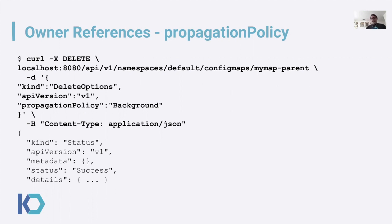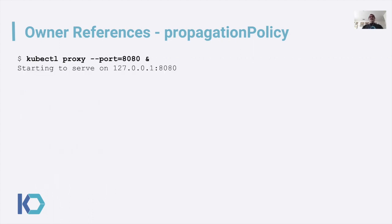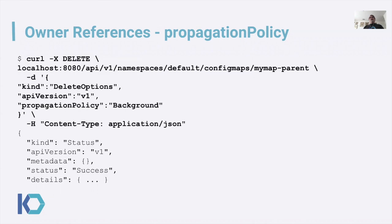Just as in the previous example, you create a proxy so you have access to the API server from your client. Then you can execute a curl command with just the URL to execute that delete command. This is the curl command for the deletion, and in here I can specify all sorts of options, one of which is a deletion option and the propagation policy for a background deletion.